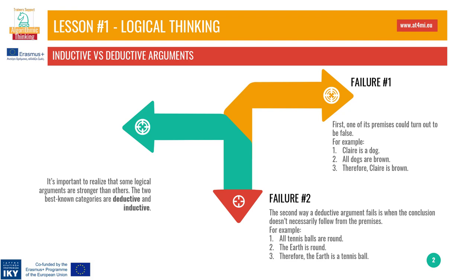A deductive argument is the strongest form of reasoning because its conclusion necessarily follows from its premises, so long as it has been constructed properly and the premises are incontrovertibly true. We've already seen an example of deductive reasoning — the assessment of Yiannis's mortality. While deductive arguments are strong, they have very strict standards, which makes them hard to construct. A deductive argument can fail in one of two ways. First, one of its premises could turn out to be false.